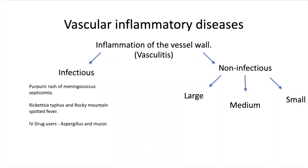Vasculitis is a general term for vessel wall inflammation. The two most common pathogenic mechanisms are immune-mediated inflammation and direct vascular invasion by infectious pathogens. Examples of infectious diseases include the petechial rash seen with septicemia of meningococcus. Non-infectious or immune-mediated diseases can be further subdivided as large, medium, and small vessel diseases based on the vessels they primarily affect. I have condensed most of the information into tables to highlight the key differences among the variety of diseases under this topic.